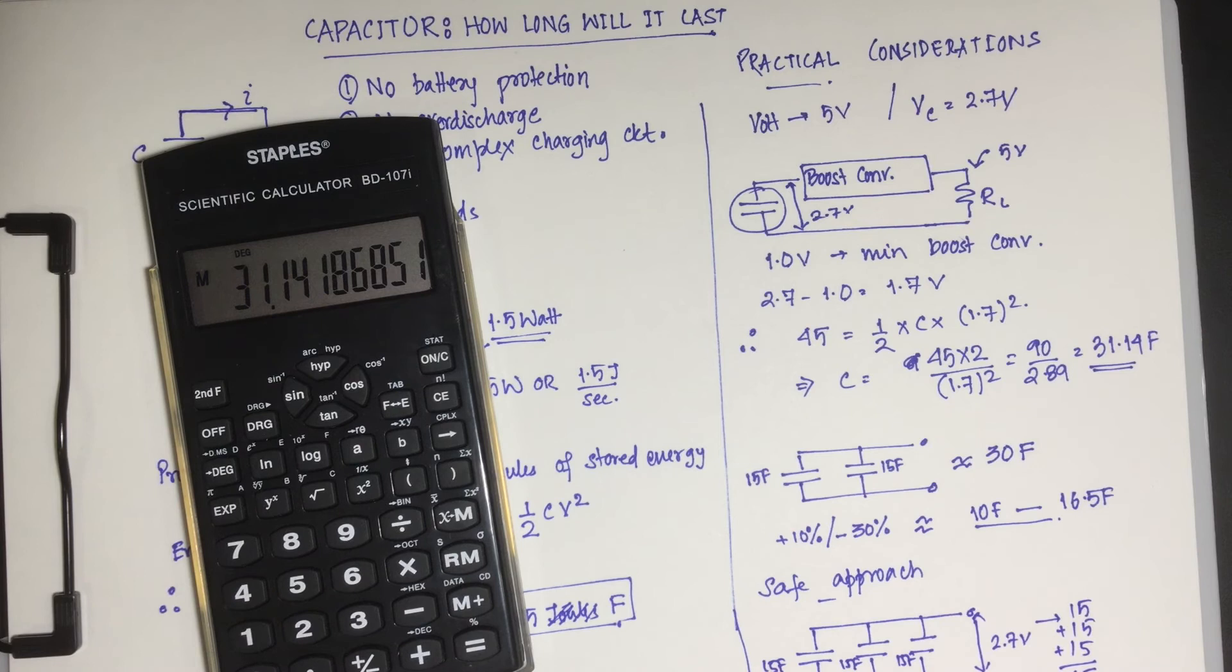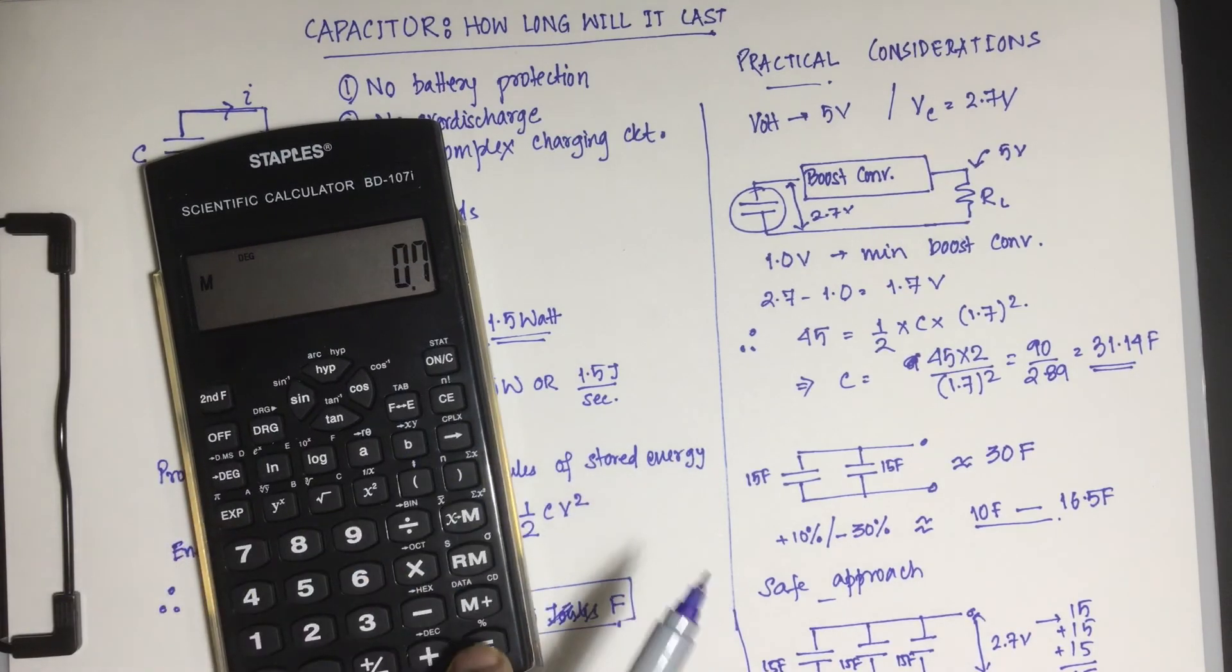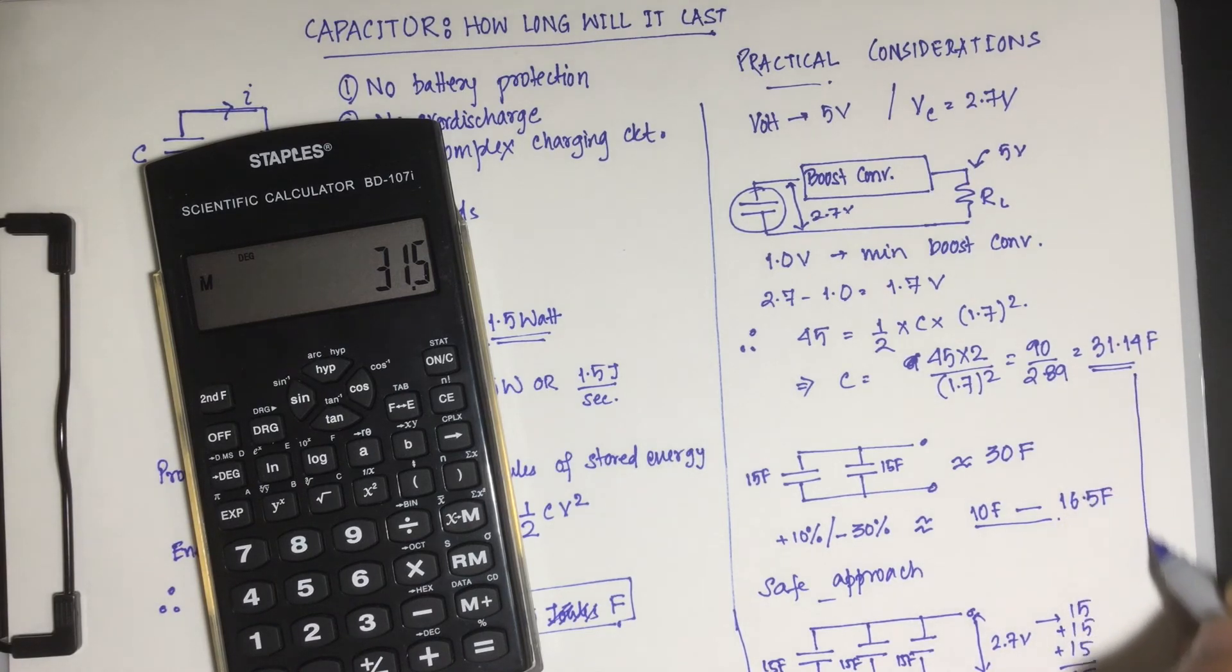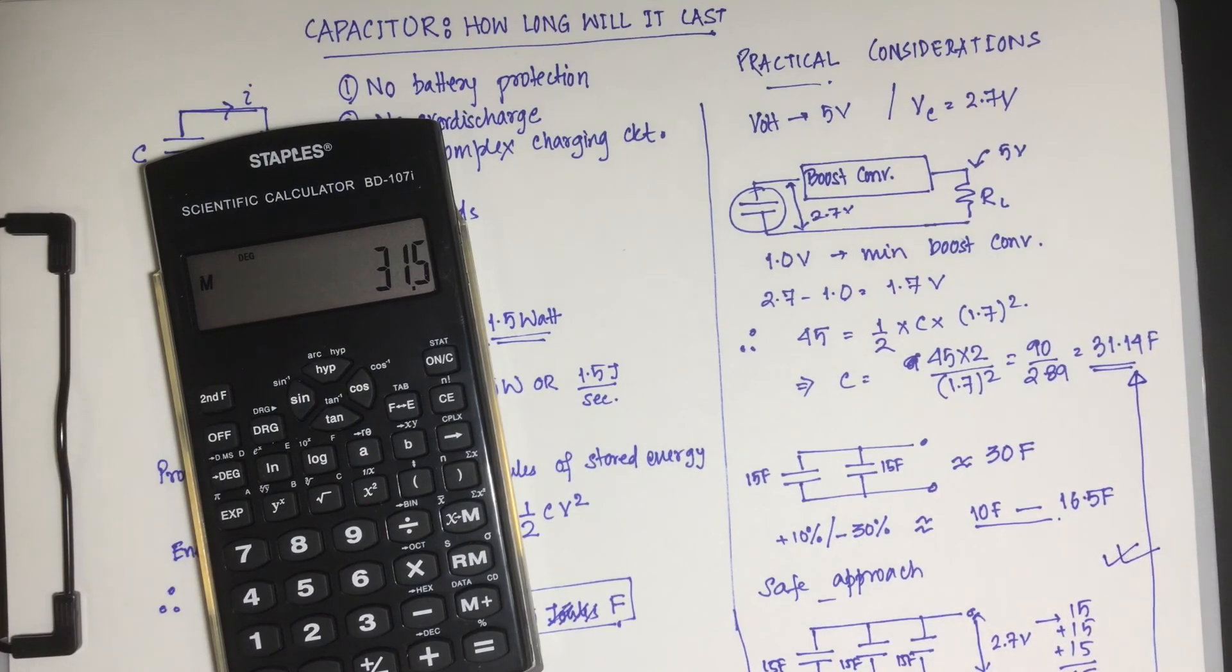And now if we compute these 45 farads once again plus and minus, so 45 and minus 30 percent, so if each one of them is minus 30 percent from the rated value we get 31.5, a fairly accurate number.